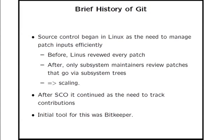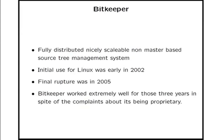The initial tool for doing this was BitKeeper. Sometime in, I think it was 2000 or 2001, Larry McVoy actually offered us BitKeeper for use in the kernel. BitKeeper is a fully distributed, nicely scalable, non-master-based system — which is very important, meaning there isn't a single master repository. Everybody who has a BitKeeper tree, and also everybody who has a Git tree, has effectively their own master copy of the kernel source. We initially used it in around 2002. However, there was a break with Larry McVoy in 2005 where we had to stop using BitKeeper. But in the intervening three years, BitKeeper worked extremely well, in spite of a huge number of complaints by open source people about it being proprietary. And the thing it gave us was the distribution and scaling that we needed.